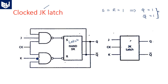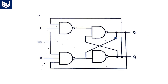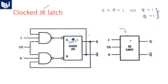Another NAND gate also has K and clock as inputs, and the output of the SR latch is connected as the input. This is the construction of the JK latch, which can be simply represented as a block with J, K, and clock as inputs. Inside, we have a NAND-based SR latch, where two NAND gates are cross-coupled.